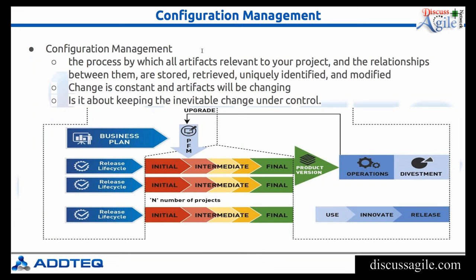Change is constant and artifacts keep changing, so how can you keep change under control? You need to be able to figure out what changed from project 1 to project 3 for a specific feature, and how easy it is for organizations to identify that.